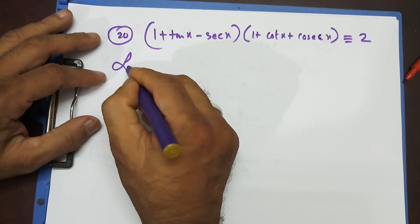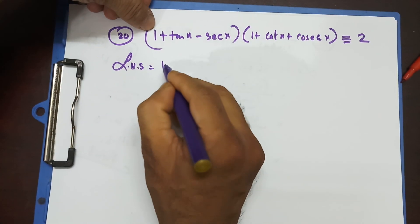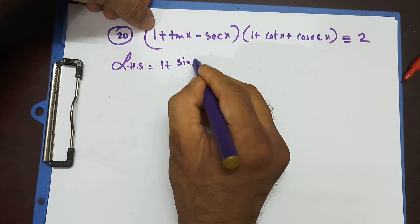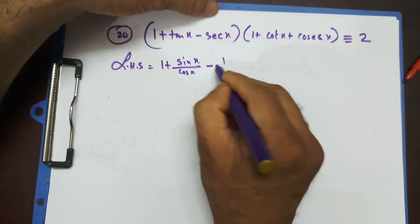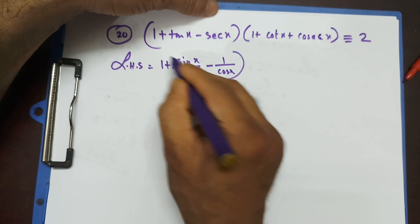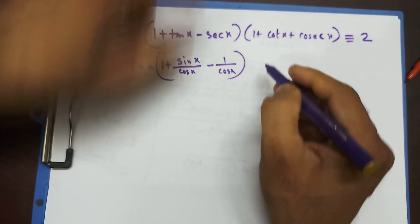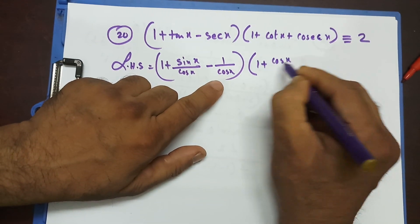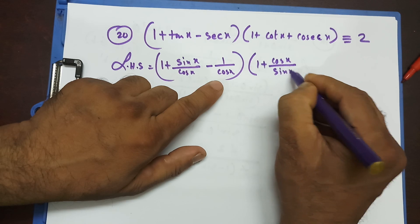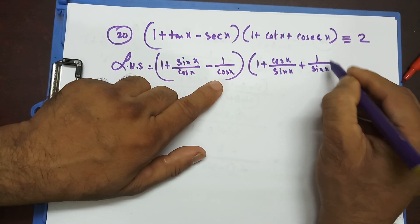Left-hand side. What I'm going to do is replace tan by sinx/cosx and secx by 1/cosx. You need to memorize this to work through it effectively. Then 1 + cotx can be written as cosx/sinx, and plus cosecx can be written as 1/sinx.